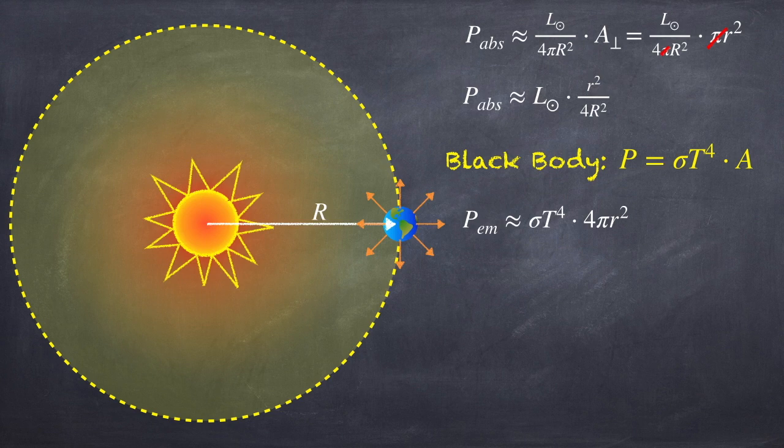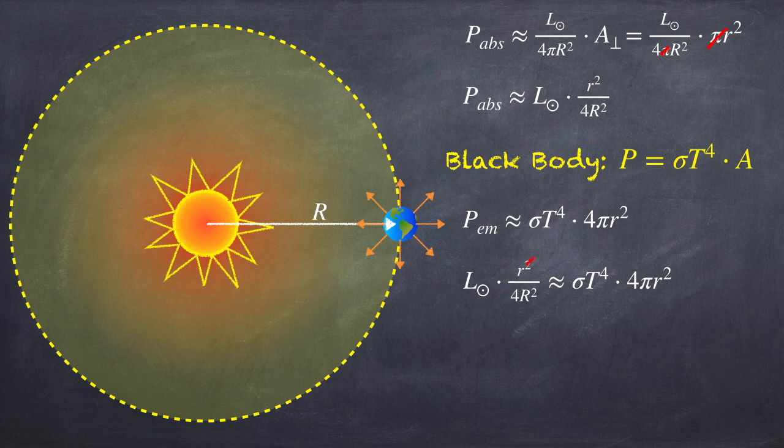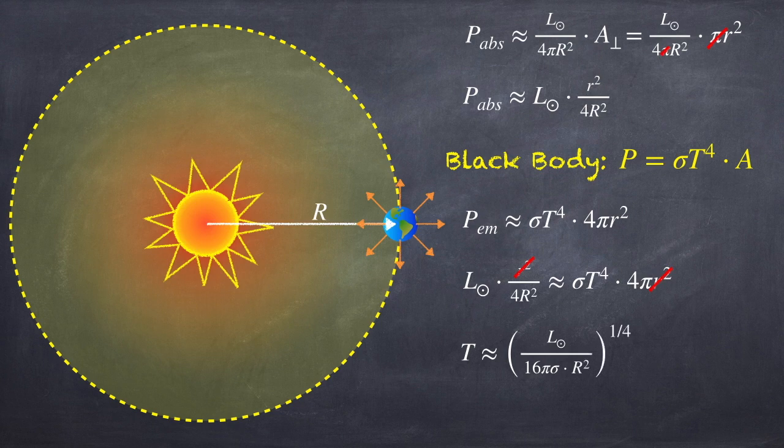Now that we know how much power is absorbed and how much is emitted, since we're assuming that the Earth is in thermal equilibrium, these two powers have to be equal to one another. The little r squareds cancel, and solving for T, we get that the average surface temperature of the Earth should be about the Sun's luminosity divided by 16 pi sigma capital R squared, all raised to the one-fourth.